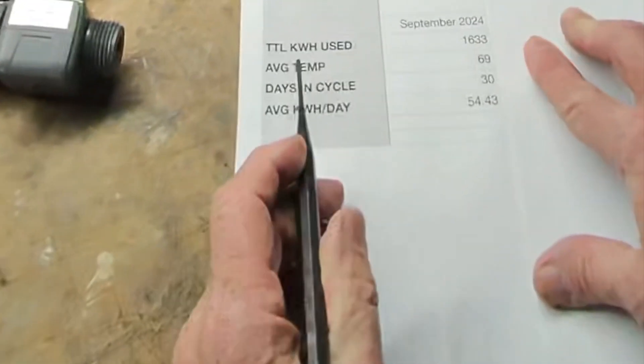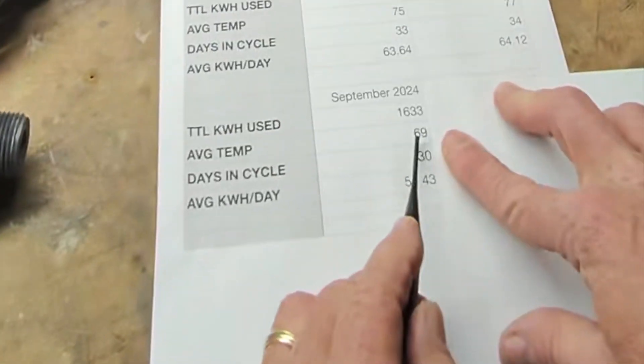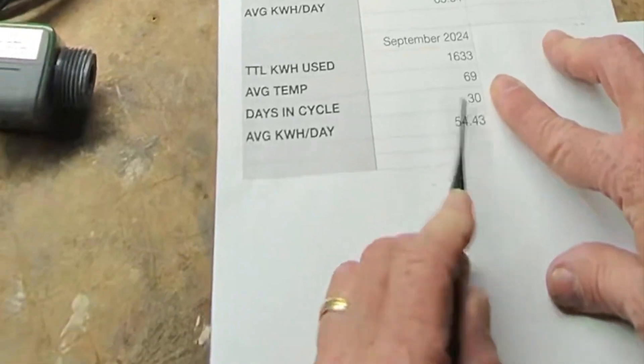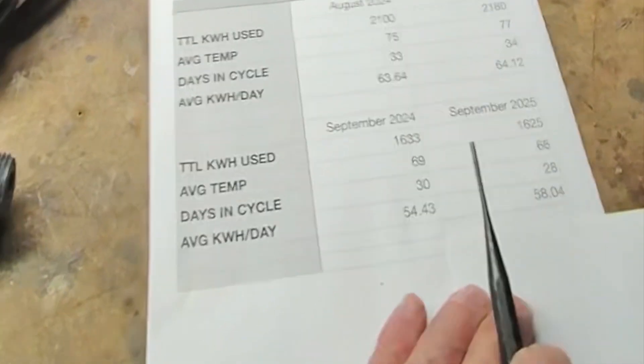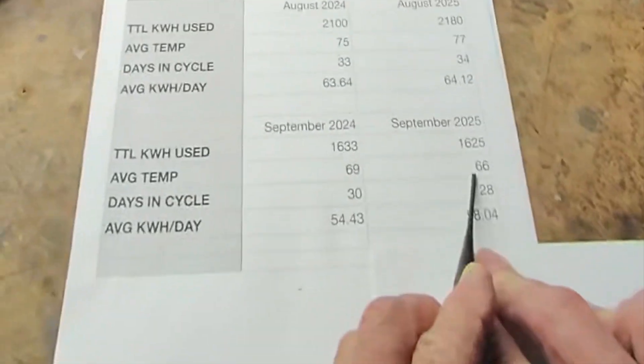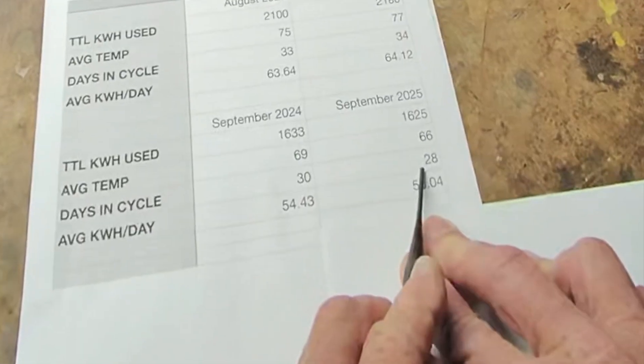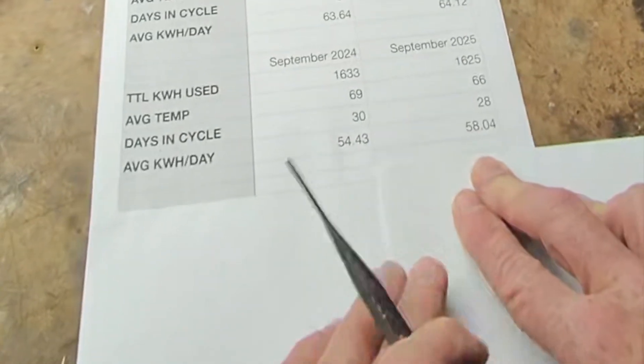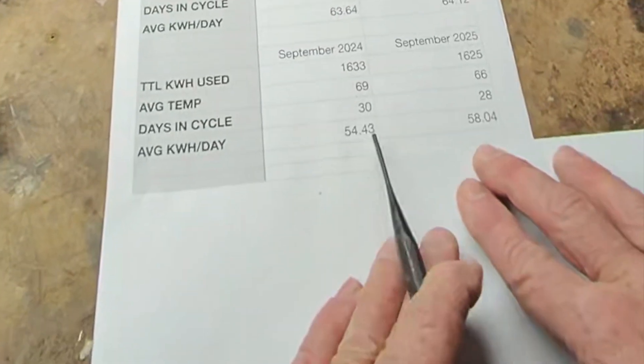So let's move on to September of 2024. Total kilowatt hours used was 1633. That makes sense. It's September, not August. We had 69 as our average temperature versus 75. Days in the cycle were 30. And the average kilowatt hours per day were 54.43. All of that makes sense, given the fact that kilowatt hours were less and the temperature was lower. But if we take a look at the total kilowatt hours used in 2025, it was 1625. So a little less. Okay, great. Fine. The average temperature was 66. So a little less there. Maybe that's why that happened. The days in the cycle were actually 28. So two days less in the cycle. And if we average the days in the cycle by the total kilowatt hours used, we've got 58. That makes no sense at all. We actually increased our kilowatt hours used per day with the misting system in place than we did when the misting system wasn't in place.